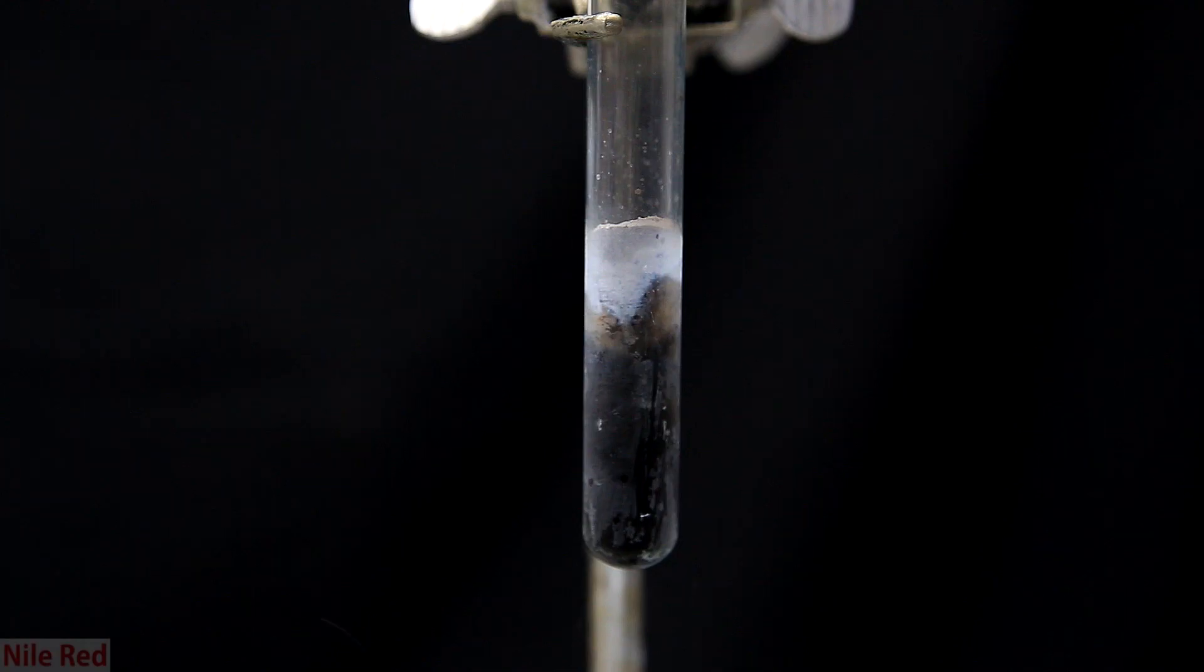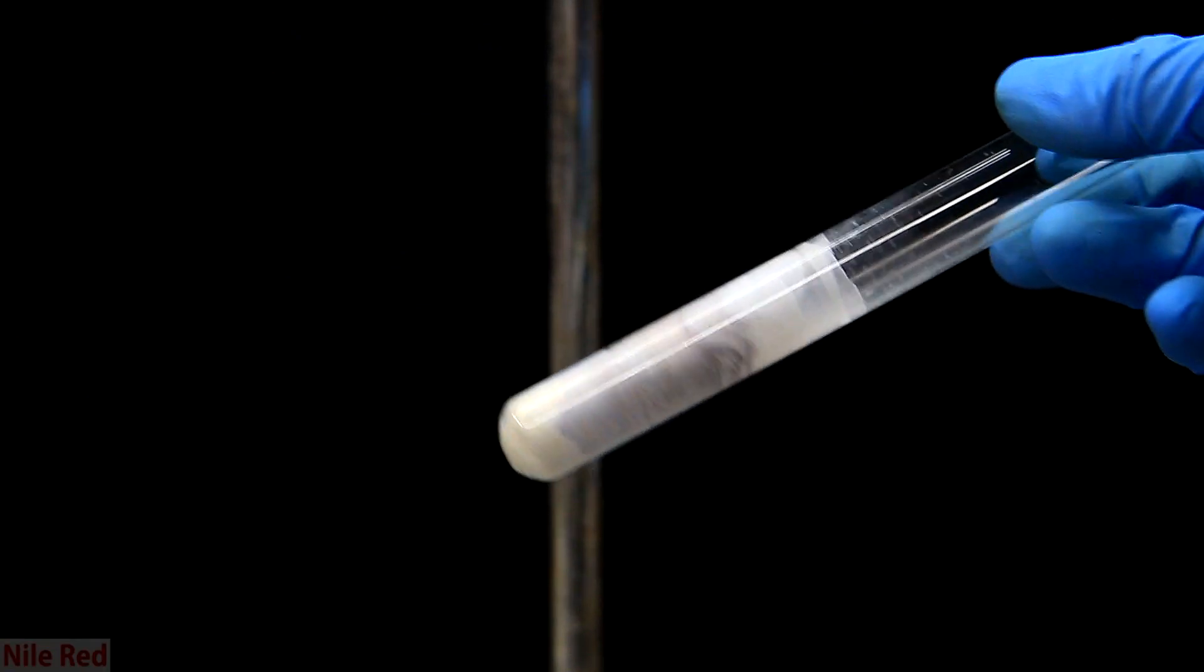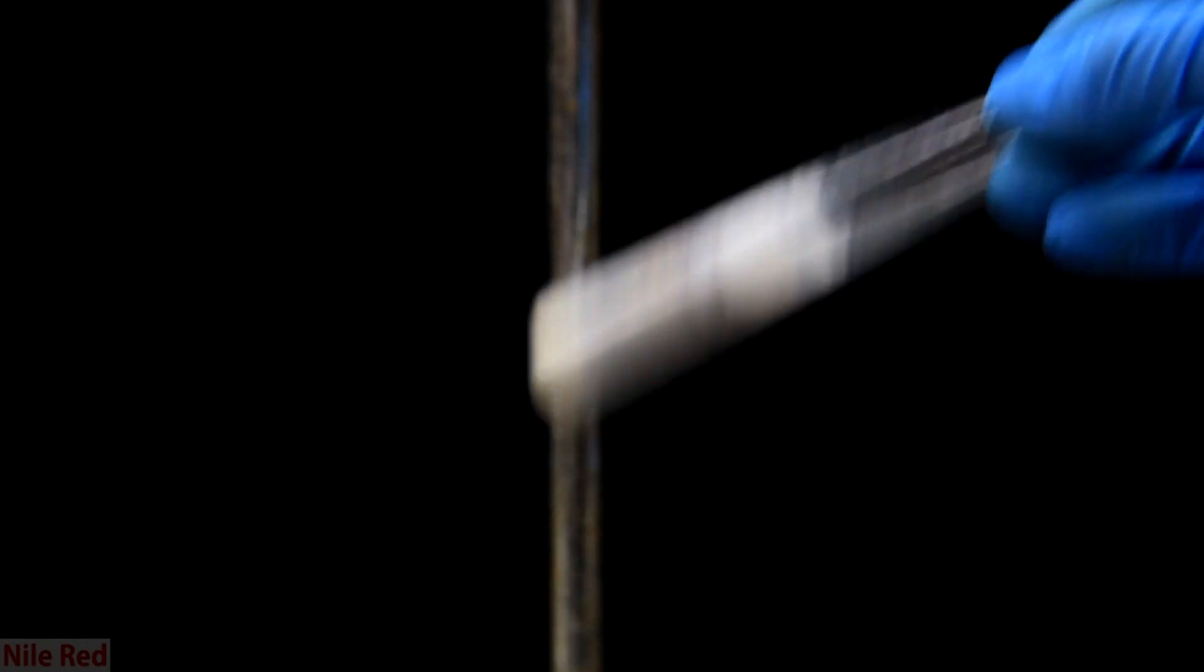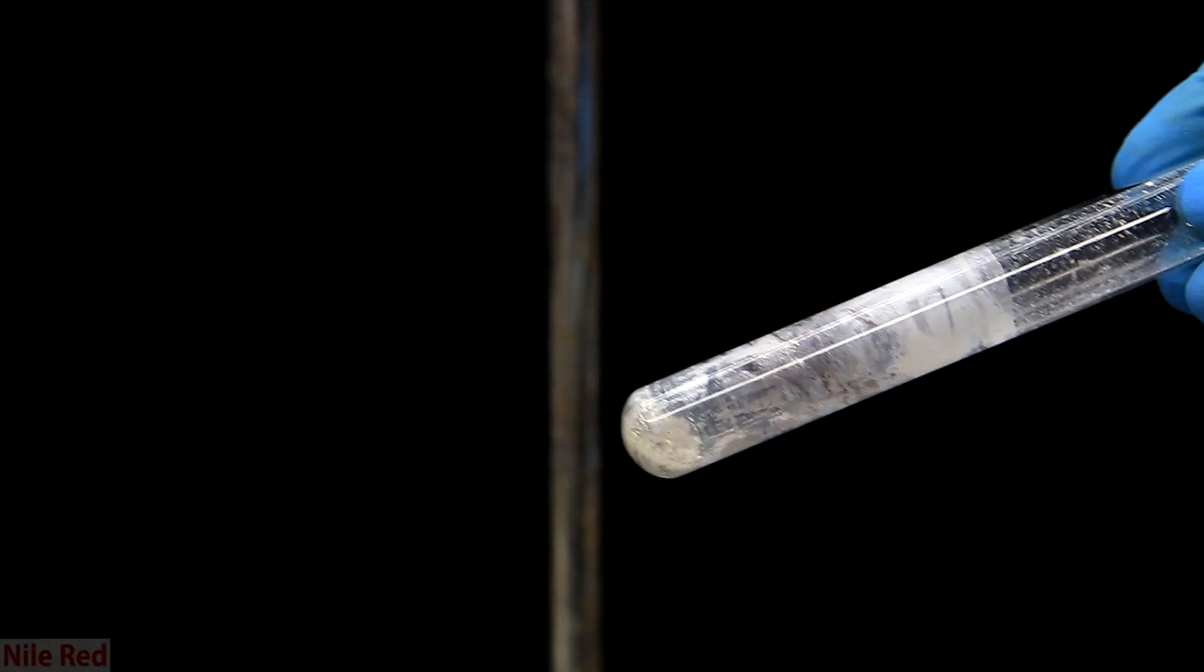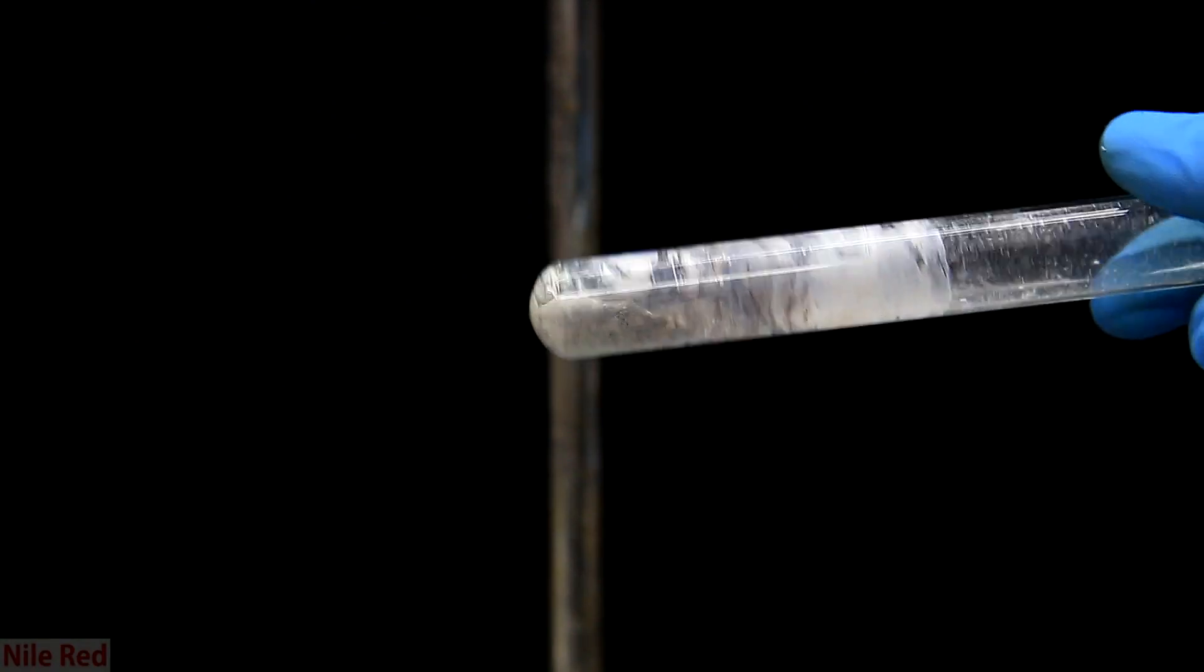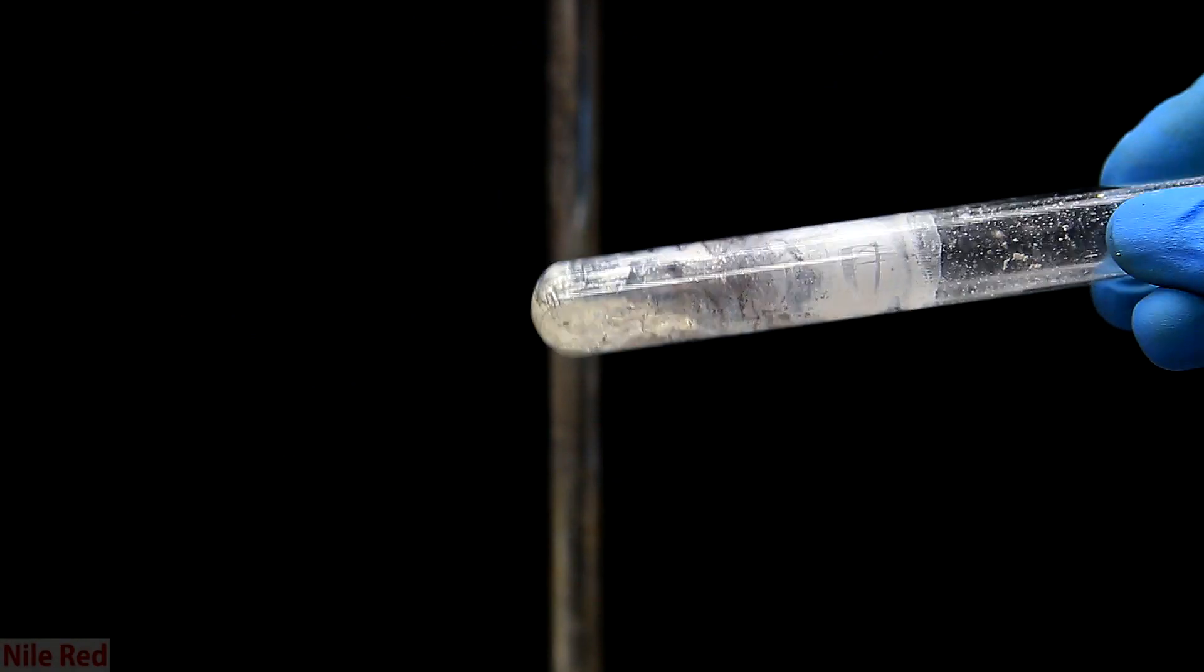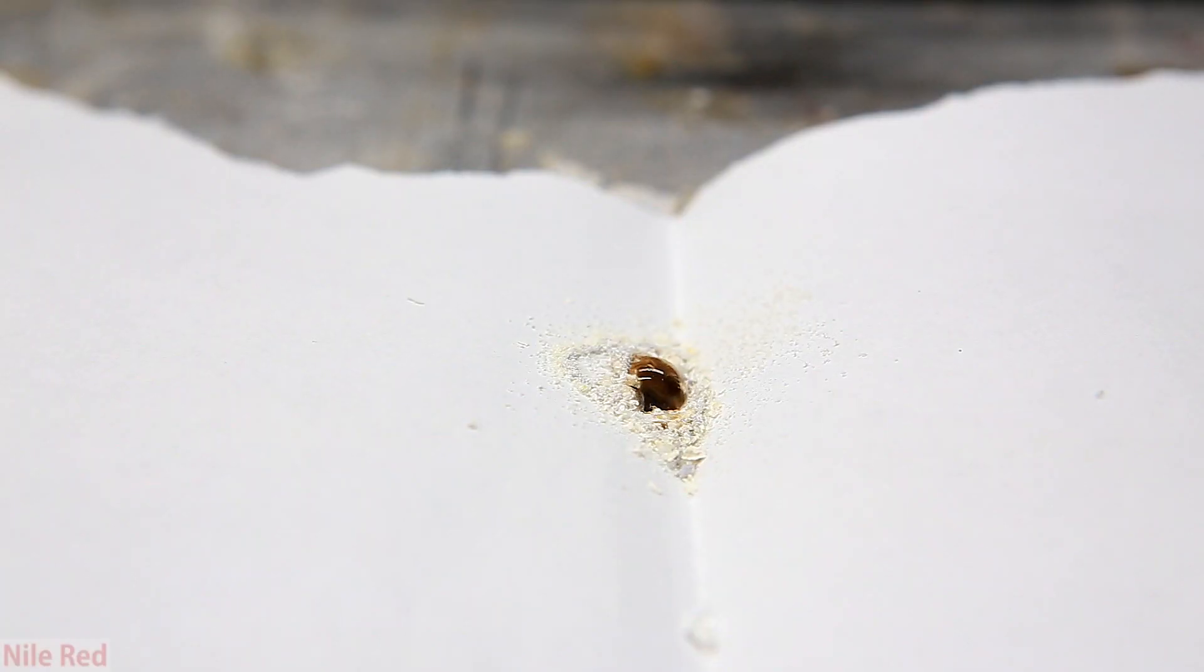After letting it sit for a little bit, it might start to splash because of the heat generated by dissolving the sodium. After a little while, we're left with a bunch of off-white powder in the test tube. I scraped everything off the side, and we're left with some off-white loose powder. When it's placed on a piece of paper, it starts to bubble and heat up. This is likely due to both sodium amide and a little bit of sodium metal reacting with the air.